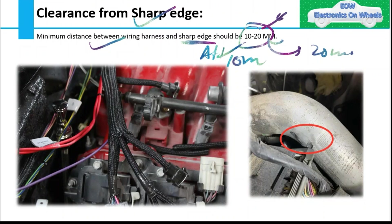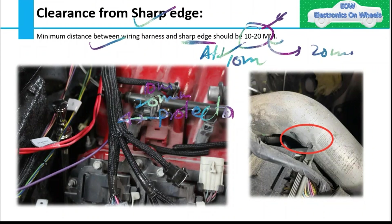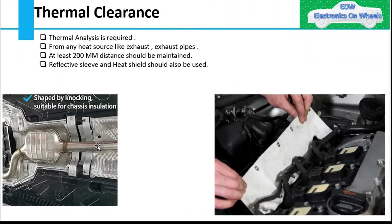One important point: if during routing you find you cannot maintain the 10mm distance due to space constraints, it does not mean you cannot route the harness there. You must provide proper protection. If you have sharp edges nearby and cannot maintain 10 to 20mm, you should provide a protective covering — even if there is occasional contact, the harness will not be damaged. Clearance should be followed, but if not possible, provide protection so the harness is not damaged.